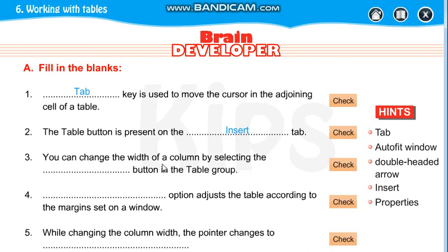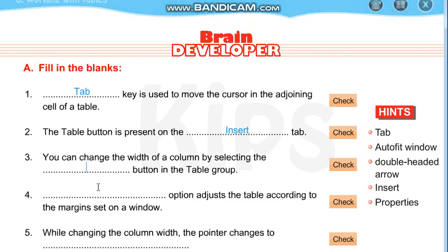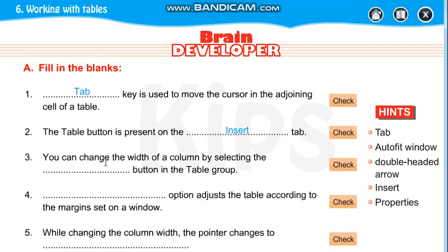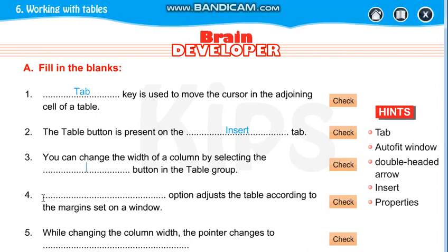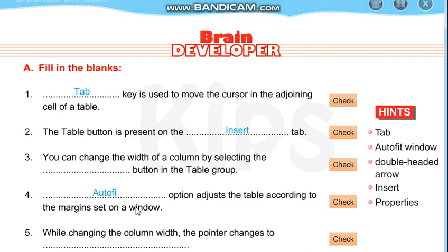You can change the width of the column by selecting the Properties button in the table group. The Auto Fit Window option adjusts the table according to the margins set on the window.